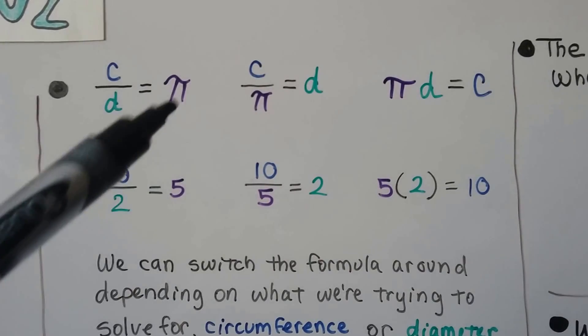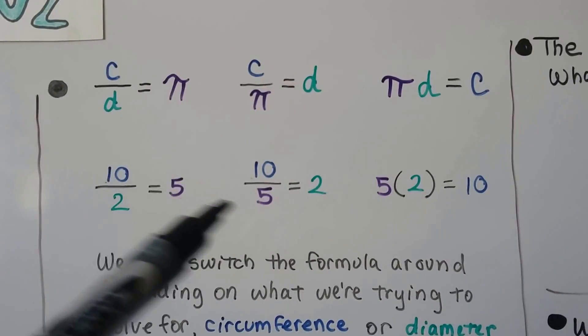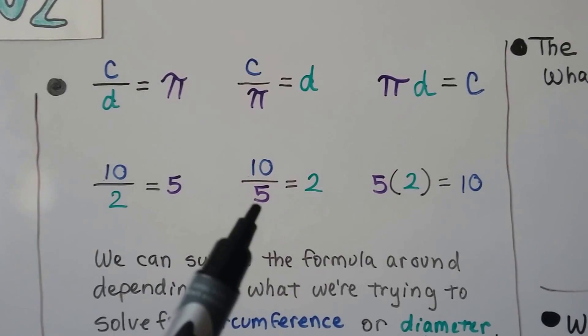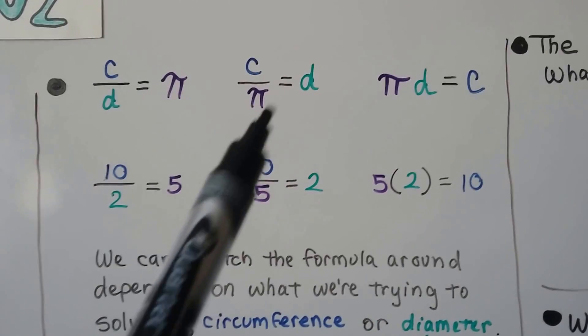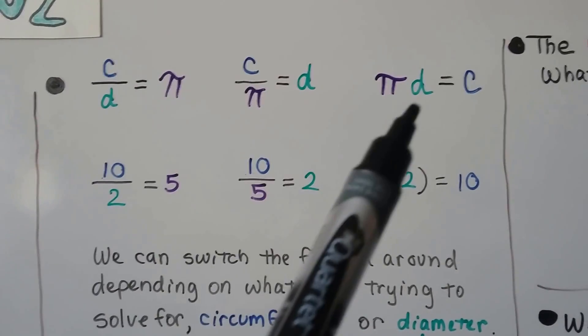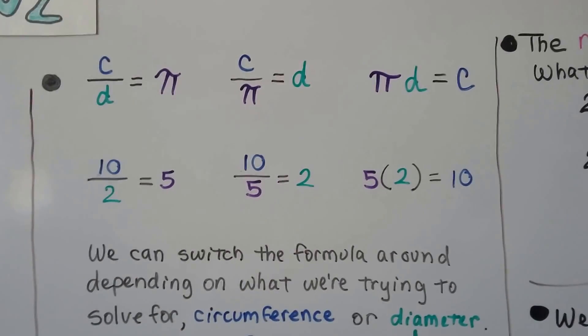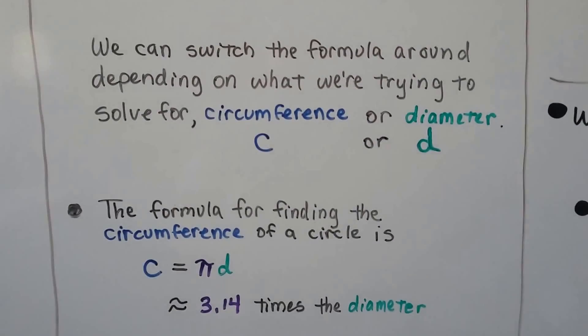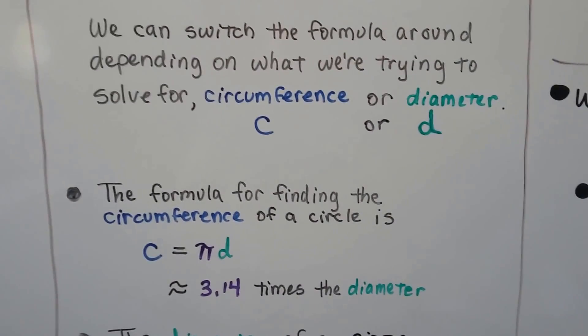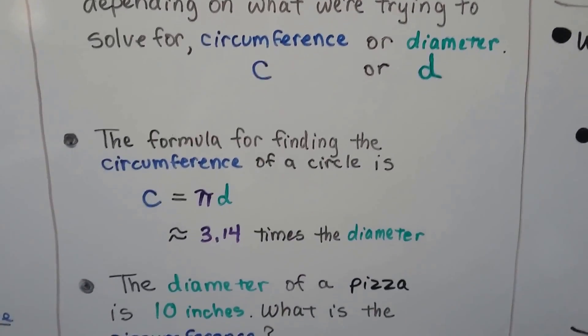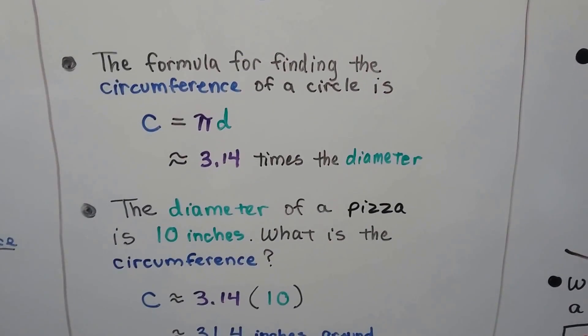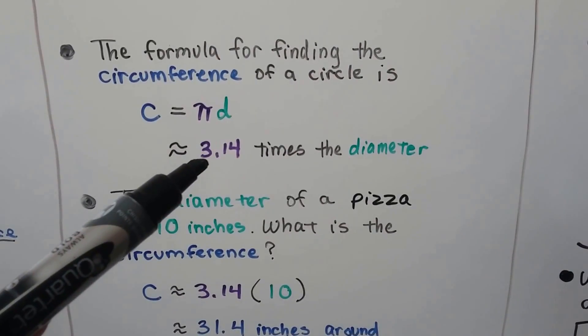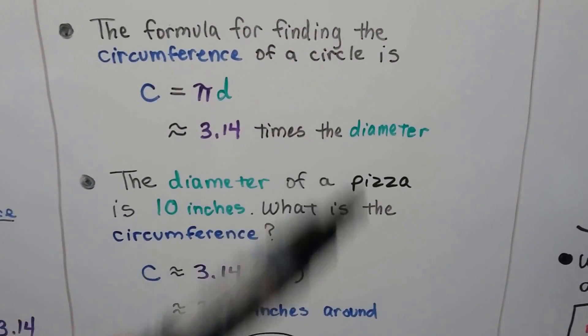We just moved it over, just like we did this one. We could also say 5 times 2 equals 10. That means pi times d is going to equal the circumference. And that's what we're going to use to find circumference, this c equals pi d. We can switch the formula around depending on what we're trying to solve for, circumference or diameter. And the formula for finding the circumference of a circle is c equals pi times d. We're going to use 3.14 times the diameter.